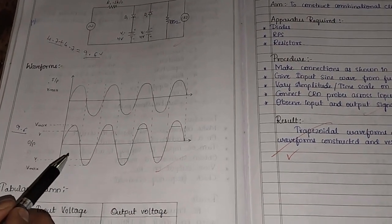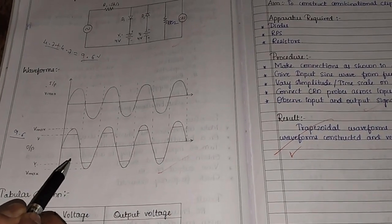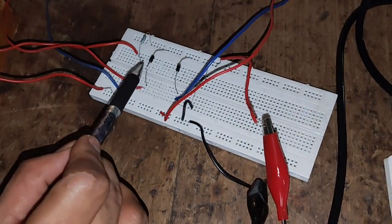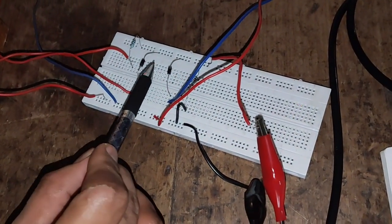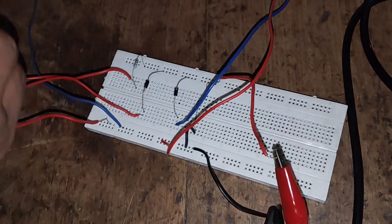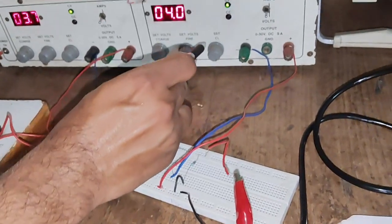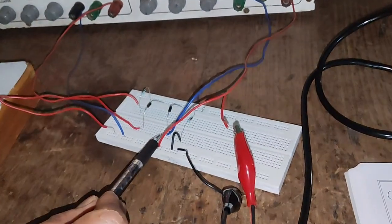Now let's see how this experiment can be conducted on a breadboard. In this circuit diagram, we can see that the diodes D1 and D2 are connected. V1 is connected at D1, and V2 is connected at D2.